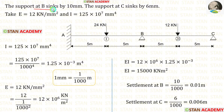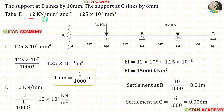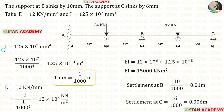The support at point B sinks by 10 mm, and the support at point C sinks by 6 mm. Young's modulus E is given as 12 kN/mm², and the moment of inertia I is given as 125 × 10⁷ mm⁴.